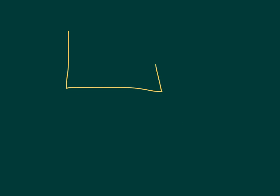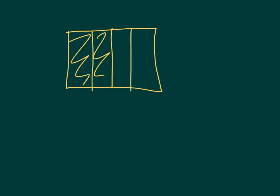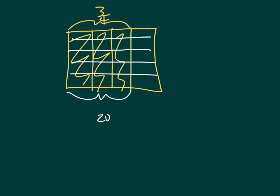So, we can use area models to look at fractions and show equivalence. Again, if we had three-fourths, to show equivalence we can draw horizontal lines — 2, 3, 4 of them. By drawing those horizontal lines, we're now looking at twentieths: 1, 2, 3, 4, 5, 6, 7, 8, 12, 16, 20ths. How many of these twentieths are we looking at? We're looking at 4, 8, 12 — 12 twentieths. So, three-fourths does equal 12 twentieths.